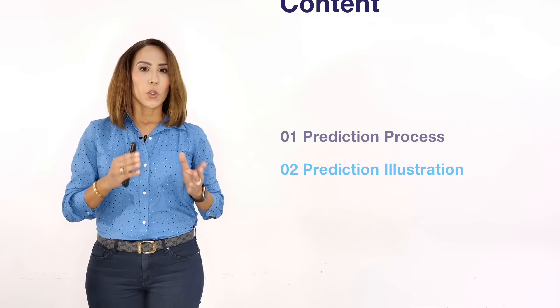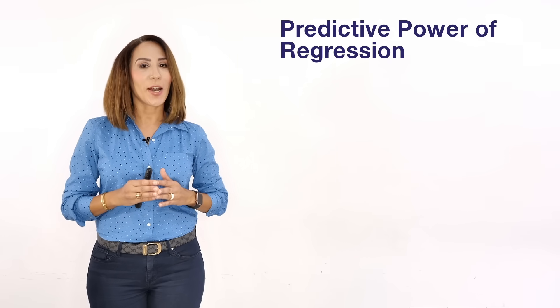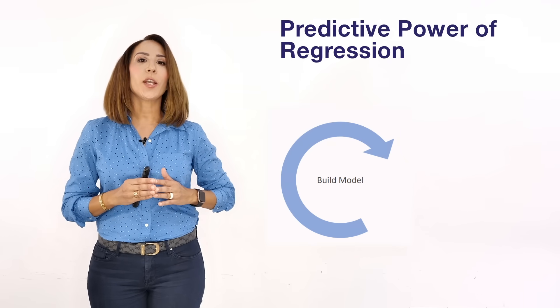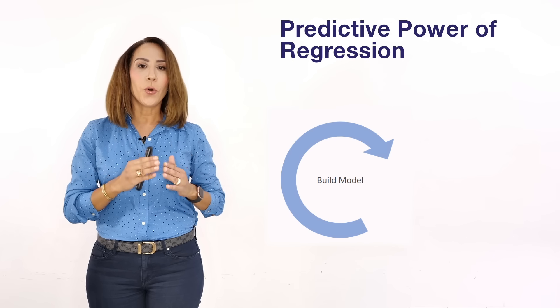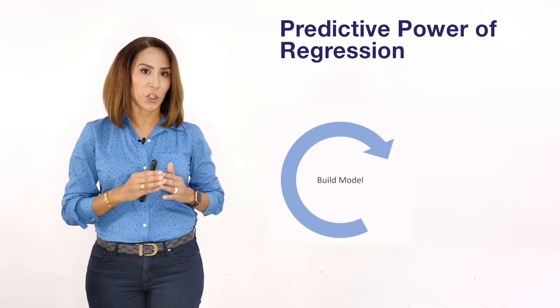Prediction process. So the process of prediction goes as follows. First step, create your model. The more robust is your model the better will be your prediction.